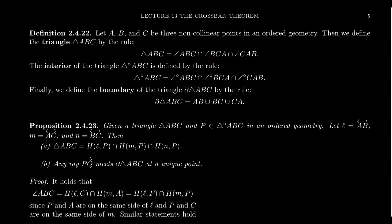The interior of a triangle is defined similarly to the interior of an angle. We'll denote the interior of the triangle with a little circle symbol to represent an open set. The interior of triangle ABC is then the intersection of the three interiors of the three angles: the interior of angle ABC, BCA, and CAB.